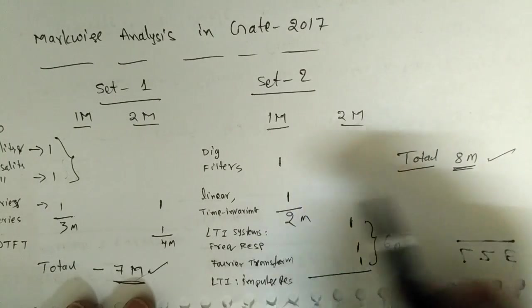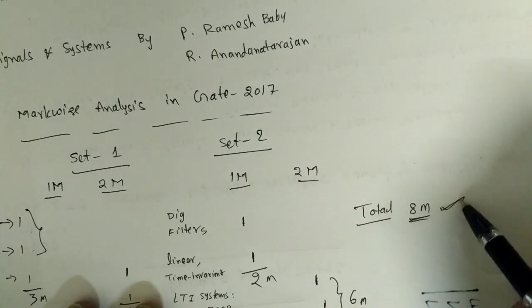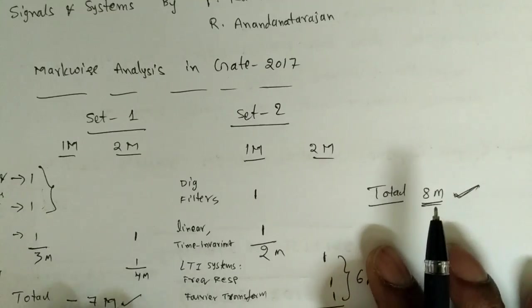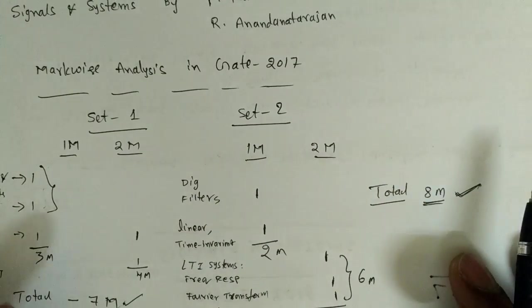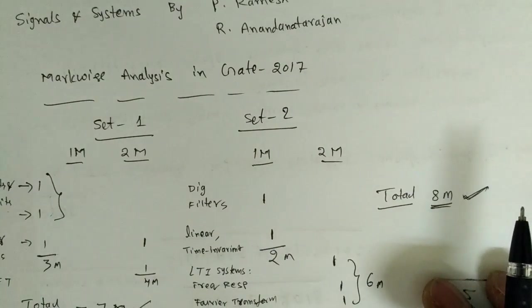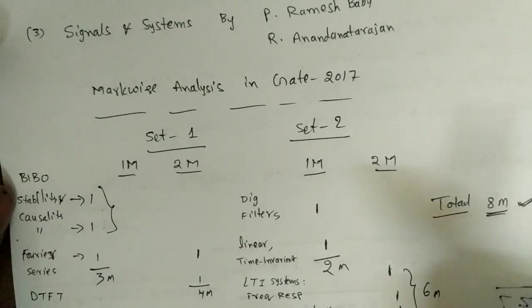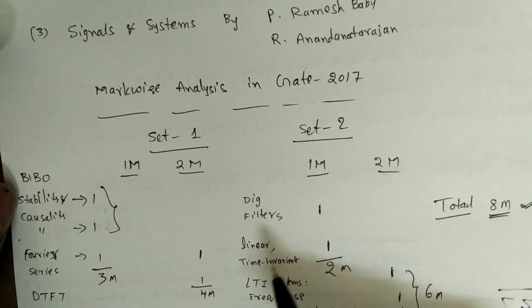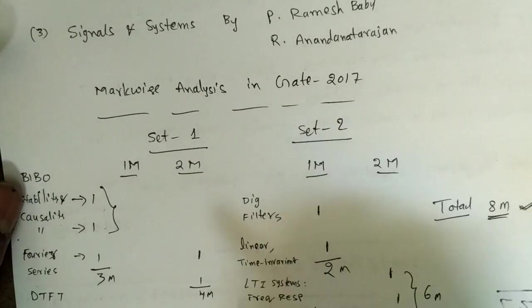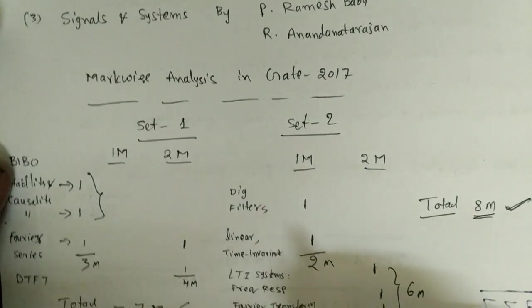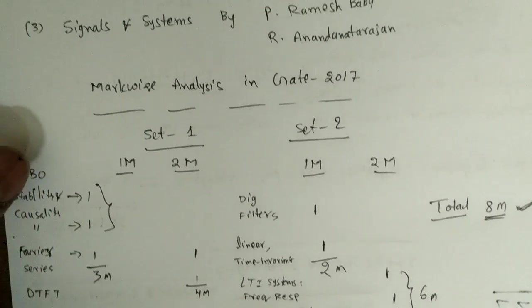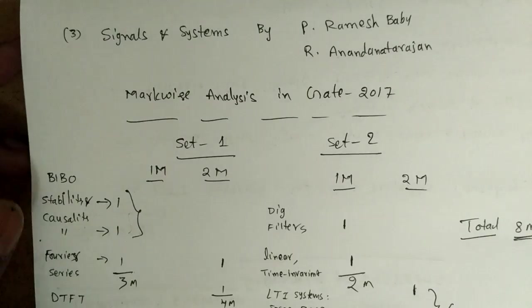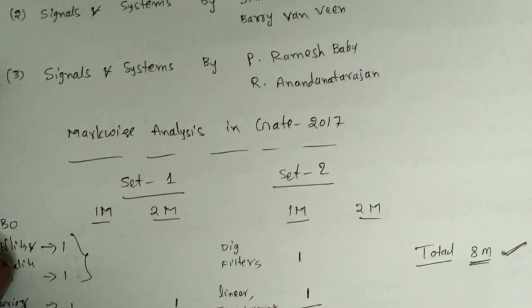Totally three questions for two marks - that's six marks, two questions for one mark - total we got eight marks in Set 2. Approximately six to eight marks we will get, variations will be there. So this is about the syllabus and the markswise analysis in GATE 2017. In the next lecture we will see the basics of signals and systems - what is the signal, types of signals, etc.